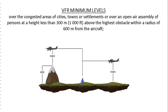VFR minimum levels: except when necessary for takeoff or landing, or except by permission from the appropriate authority, a VFR flight shall not be flown over the congested areas of cities, towns, or settlements, or over an open-air assembly of persons, at a height less than 1,000 feet above the highest obstacle within a radius of 600 meters from the aircraft.